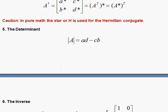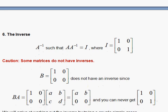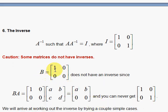And your inverse is a matrix that, when multiplied by the original matrix, gives you the identity matrix, which is 1, 0, 0, 1. Notice that some matrices have no inverses. For example, this matrix B doesn't have an inverse.